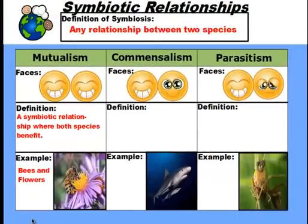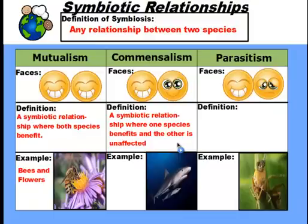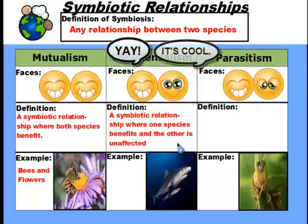Now a second kind of symbiotic relationship is called commensalism. The definition of commensalism is a symbiotic relationship where one species benefits and the other is unaffected. So this means that one of these organisms is going to get something out of this relationship. So that's why we have one picture smiling really big here. And the other organism is unaffected. It's neither harmed or helped at all.